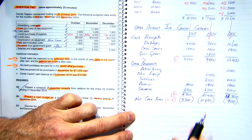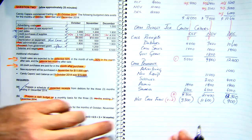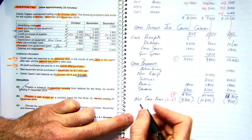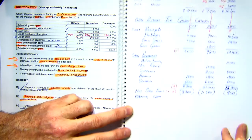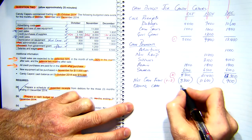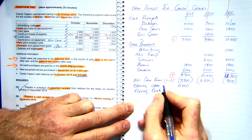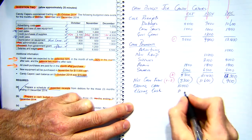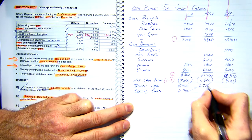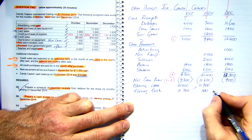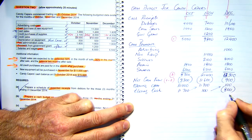Not looking good for this business — they've got a lot of cash outflow. The opening cash balance is $15,000. So opening cash is $15,000, giving a closing cash of $11,700 for October. That $11,700 becomes the opening balance for November, and the closing cash becomes $100. That $100 carries forward, leaving us with a cash overdraft of $800 at the end of December.